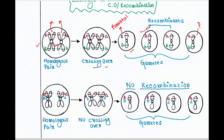But these two gametes have a different combination. Capital A gene is present, but along with capital A, we originally had capital B. Since crossing over happened, this chromosome now contains small b instead. And in this other chromosome, small a is present, but since crossing over happened, capital B is present with small a. So these two gametes are not like the parents — they are called recombinants. And the distance between gene A and gene B is large, so crossing over occurs here and the probability of crossing over is also more.